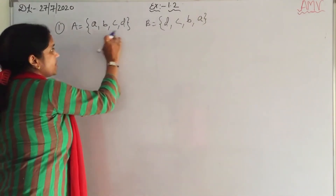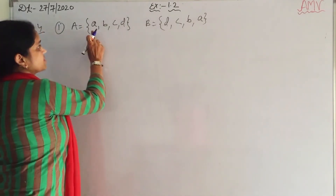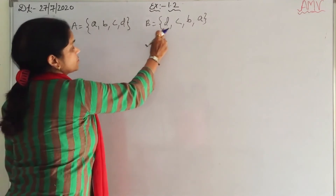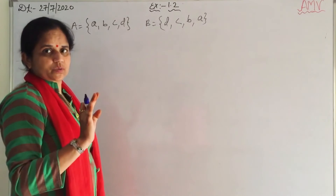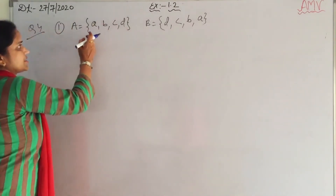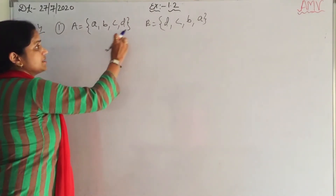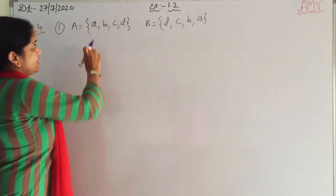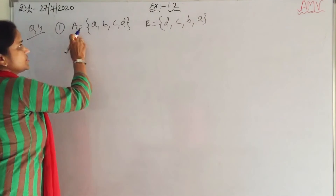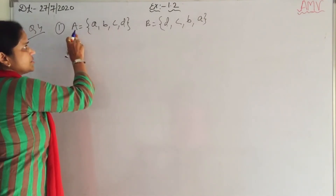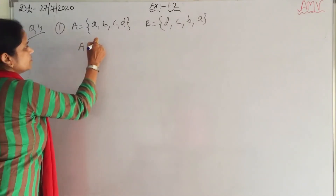First of all, the number of elements in both sets is equal — there are 4 elements in each. The order doesn't matter in sets. Element a is in set A and also in set B; b is in A and in B; c is in A and in B — same for all elements. So A is equal to B.